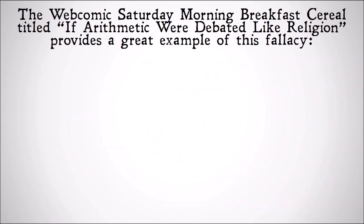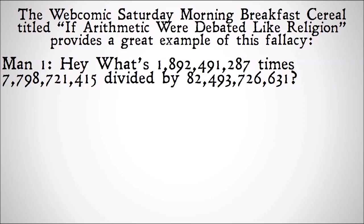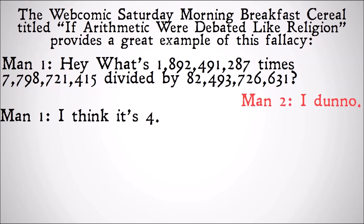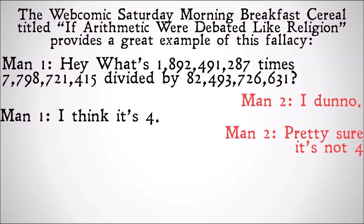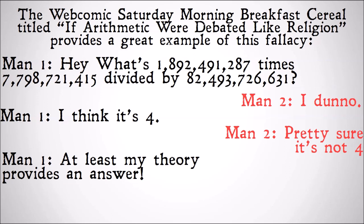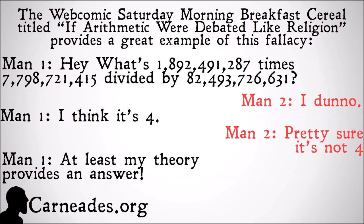The webcomic Saturday Morning Breakfast Serial, titled 'If Arithmetic Were Debated Like Religion,' provides a great example of this fallacy and why it's so ridiculous to think that abduction is connected to truth. Man 1: 'What's 1,892,491,287 times 7,798,721,415 divided by 82,493,726,631?' Man 2: 'I don't know.' Man 1: 'I think it's 4.' Man 2: 'Pretty sure it's not 4.' Man 1: 'At least my theory provides an answer.' Simply because your answer is the best of the ones we've thought of so far doesn't mean it's the right one. Watch this video and more at carnades.org, and stay skeptical, everybody.